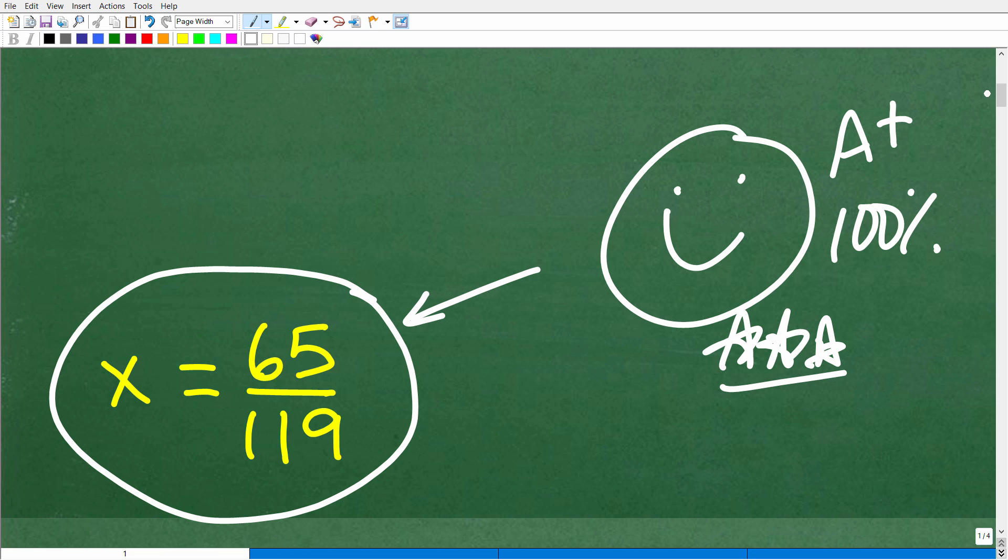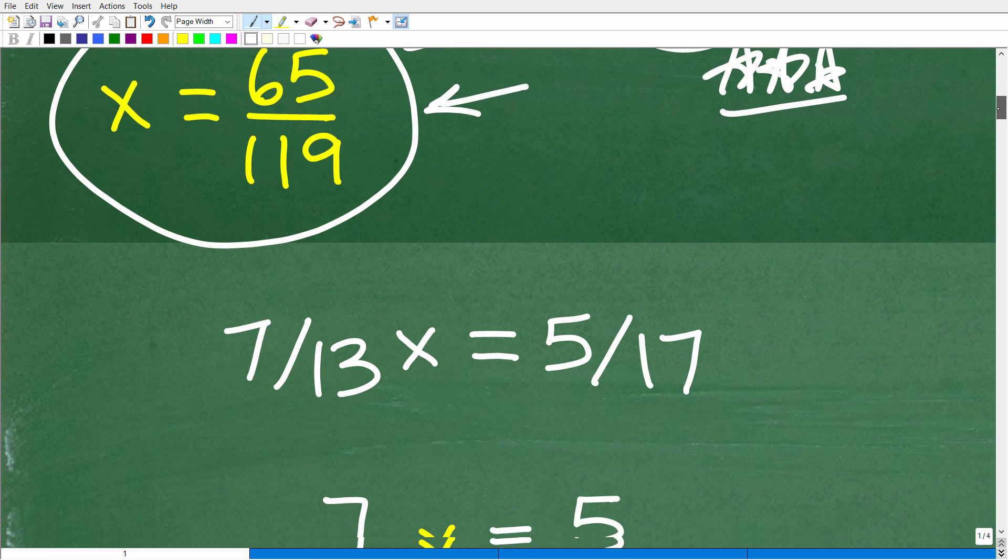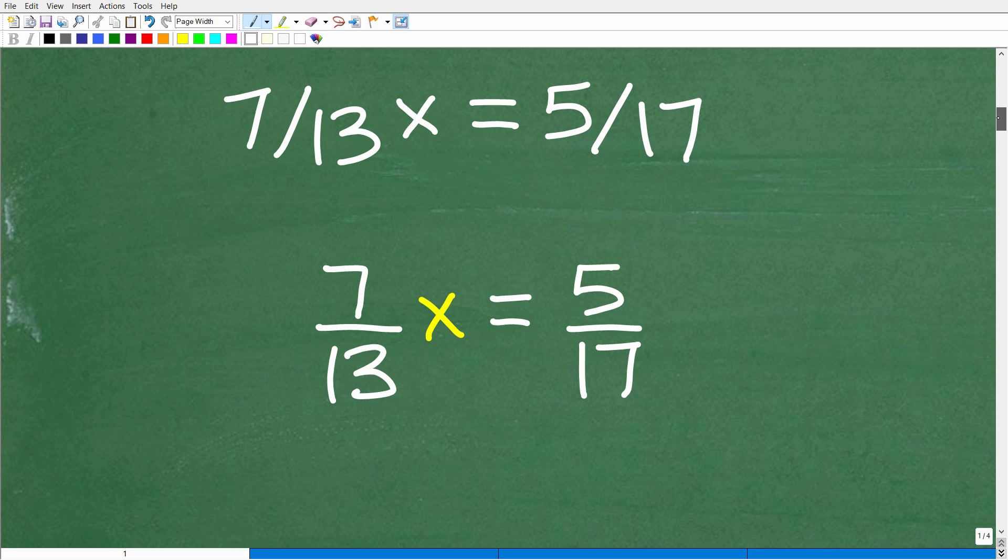All right, so all jokes aside, if you didn't get this, but you did get a decimal, you may not be far off. Okay, now, you can quickly check. Just take 65 divided by 119, and if your answer is pretty close to that result, well, then, you were in the ballpark. Okay, but there is a big problem here that I'm going to show you what a lot of students do. But let's go ahead and first talk about how to do this correctly.